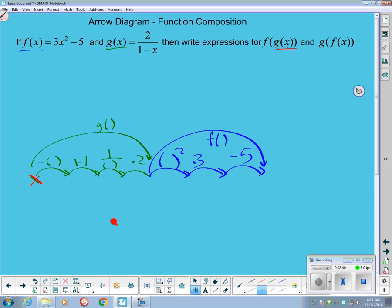So take the x, change the sign, add 1, reciprocate, multiply by 2. So that's going to give me a 2 over 1 minus x.